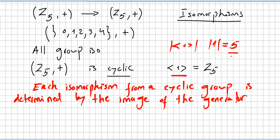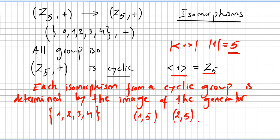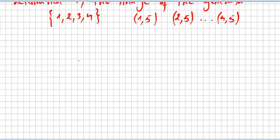All elements of order 5 in Z5 are all integers in Z5 that are relatively prime to 5. That will be 1, 2, 3, and 4 — excluding zero. You can check that 1, 2, 3, and 4 are each relatively prime to 5.